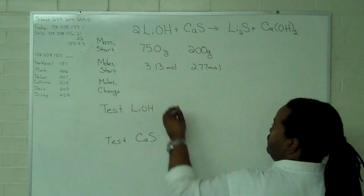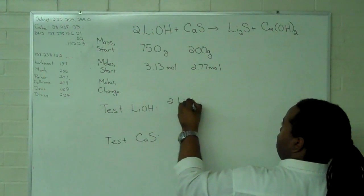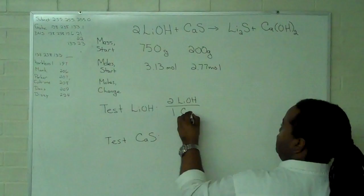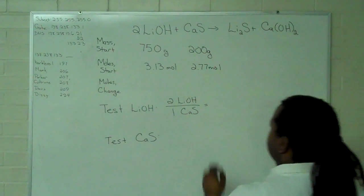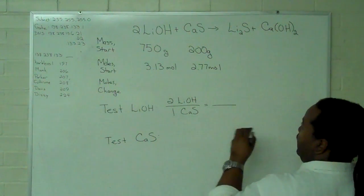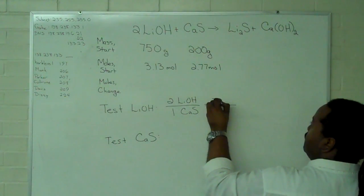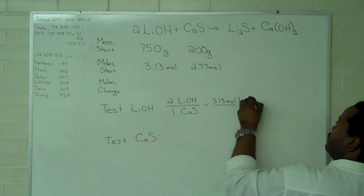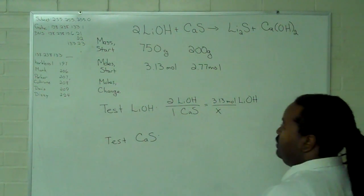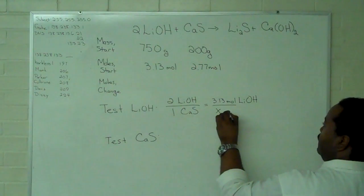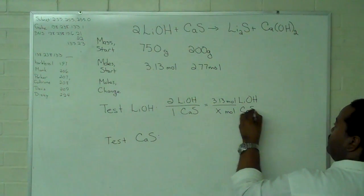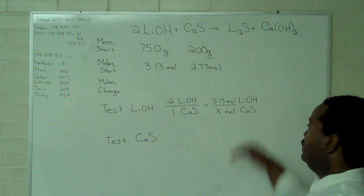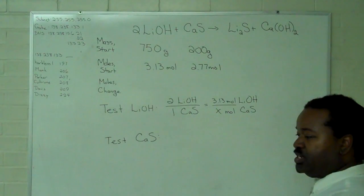So, in order to do this, we form a ratio that is based on the mole ratio in our balanced reaction, and we're going to compare that against the actual numbers of moles we have. In this case, the value X will tell us how many moles of calcium sulfide are necessary to completely use up all 3.13 moles of lithium hydroxide.